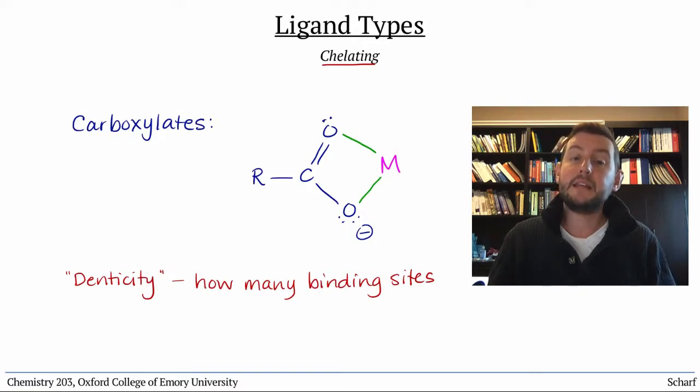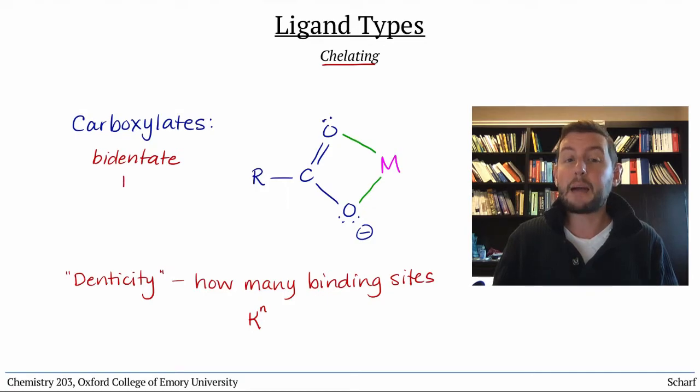A monodentate ligand binds to a metal with a single atom, a bidentate one binds through two separate atoms, and so on. We sometimes refer to denticity with the letter kappa and a superscript number, so carboxylates can act as bidentate chelating ligands that can bind to a metal in a kappa II fashion.